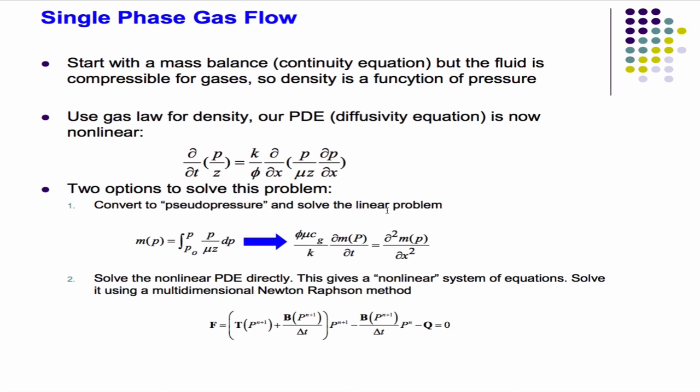There are two ways to handle that nonlinearity. An old way — I don't think you'd do this anymore — would be to use pseudo-pressure, a mathematical function that accounts for compressibility, so you can plug that in and solve the linear problem. The more robust and accurate way, and really no reason nowadays with big computers not to do this, is to just solve the fully nonlinear equation.